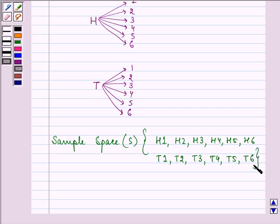So these are the 12 possible outcomes which is there in the required sample space.